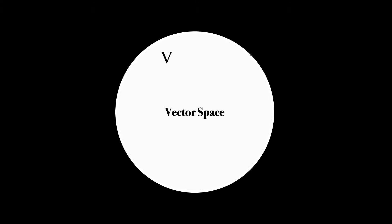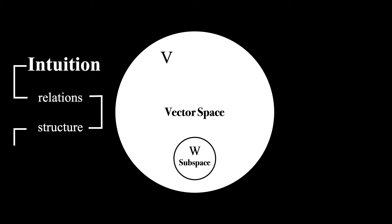In an earlier video in this playlist, I described abstract vector spaces and the axioms they satisfy. The next topic I'd like to introduce are subspaces, which are in a sense smaller vector spaces. I'll do this by developing your intuition through two basic mathematical concepts: relations and structure. By the end of the video, the precise definition of a subspace should become crystal clear.